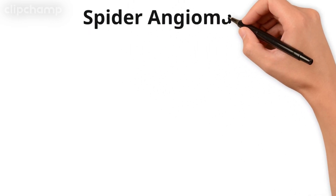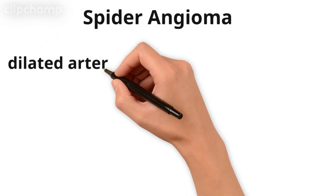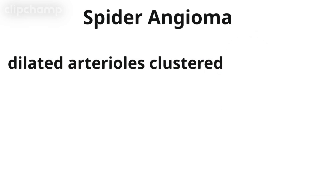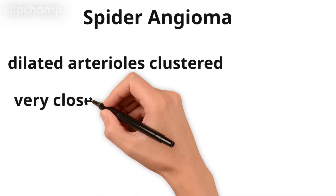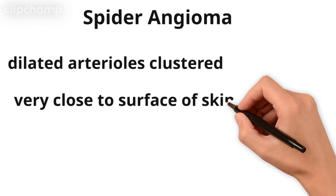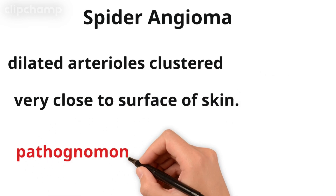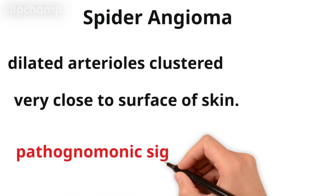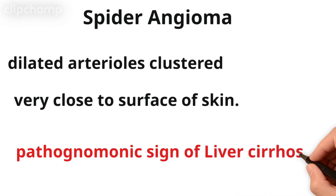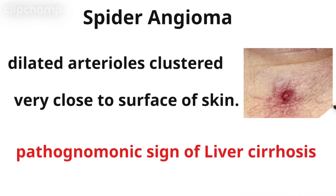Next is spider angioma. Spider angioma is actually dilated arterioles clustered very close to the superficial layer of the skin. It is the pathognomonic sign of liver cirrhosis. This is the most important sign of liver cirrhosis — this is the spider angioma.